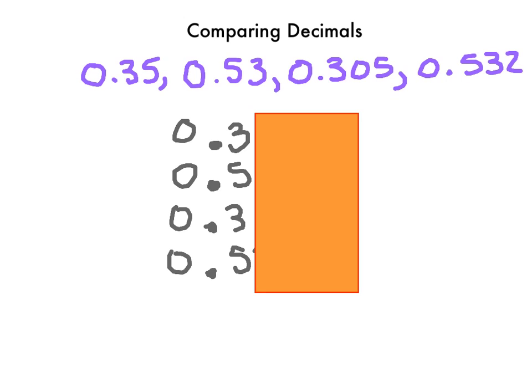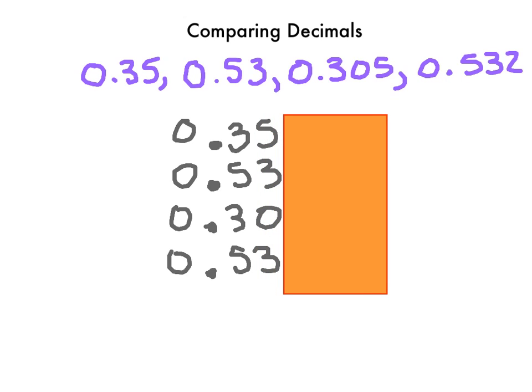Which ones are smaller? Less than would be the two three-tenths; greater than would be the two five-tenths. Can I clearly see which one's the smallest? Not yet. But I do know it's narrowed down to the threes. So let's move the cover over and compare just the threes. Now I'm in the hundredths place. I see thirty-five hundredths, and I see thirty hundredths. Which one would be smaller? Well, thirty is less than thirty-five, so that would be the smaller one.